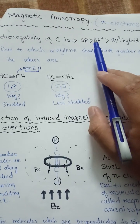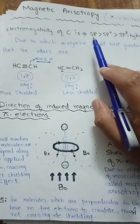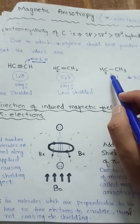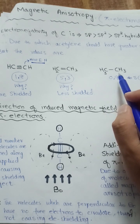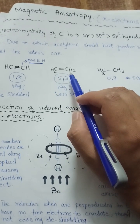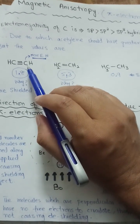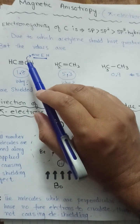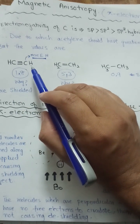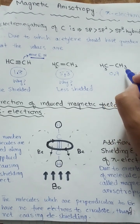S-character decreases further to 25% in sp3. If there is greater S-character, the electrons will be more towards the nucleus of the carbon and it will be more electronegative. Looking at hybridization: in ethane the carbon is sp3 hybridized and less electronegative; in ethylene the carbon has sp2 hybridization; and in acetylene the carbon is sp hybridized, making it more electronegative. This is why those protons are more deshielded.